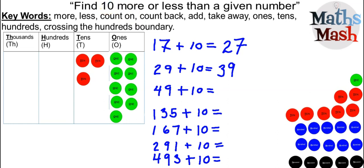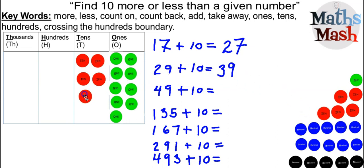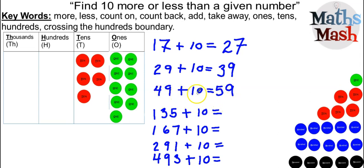Let's look at 49 plus 10. I have four sets of 10 and nine ones — that's 49. We want to find out what is 10 more than 49. We bring one of our tens counters over and count them up. The ones column hasn't been changed at all, so the ones digit stays the same — it's going to be a 9. And we've got 10, 20, 30, 40, 50 — five sets of 10 makes 50. So our answer is 59: 10 more than 49 is 59, and 49 plus 10 makes 59.